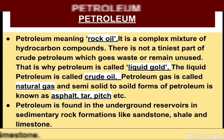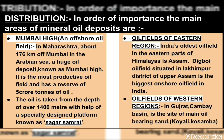Petroleum is found in underground reservoirs in sedimentary rock formations like sandstone, shale and limestone. In terms of the Indian subcontinent, there are three main oil fields: Mumbai High, oil fields of eastern regions, and oil fields of western regions.